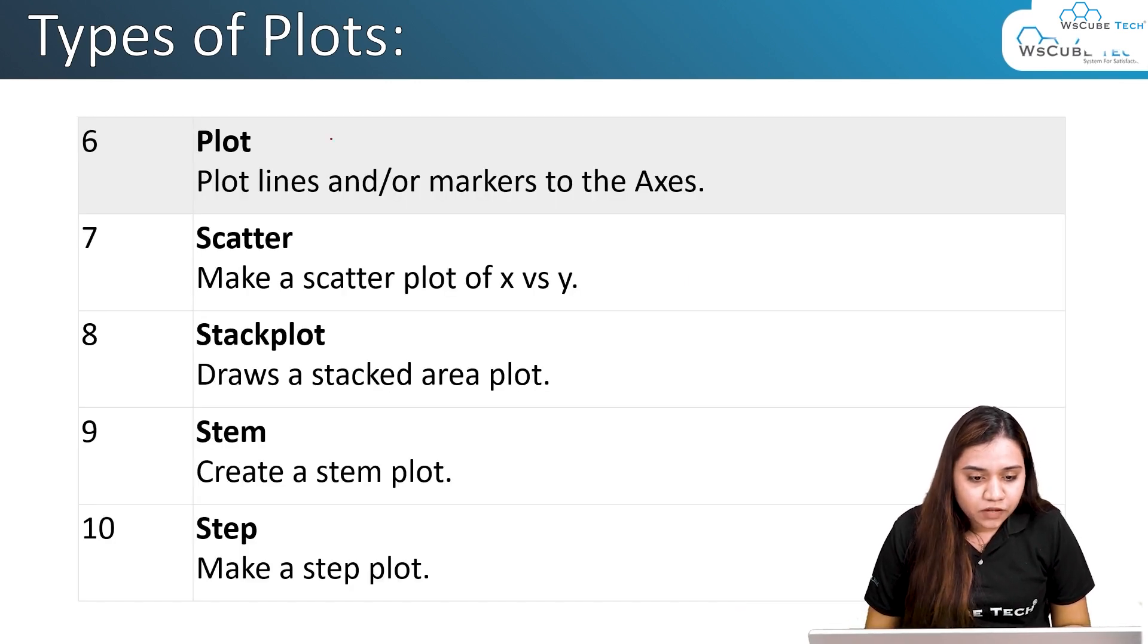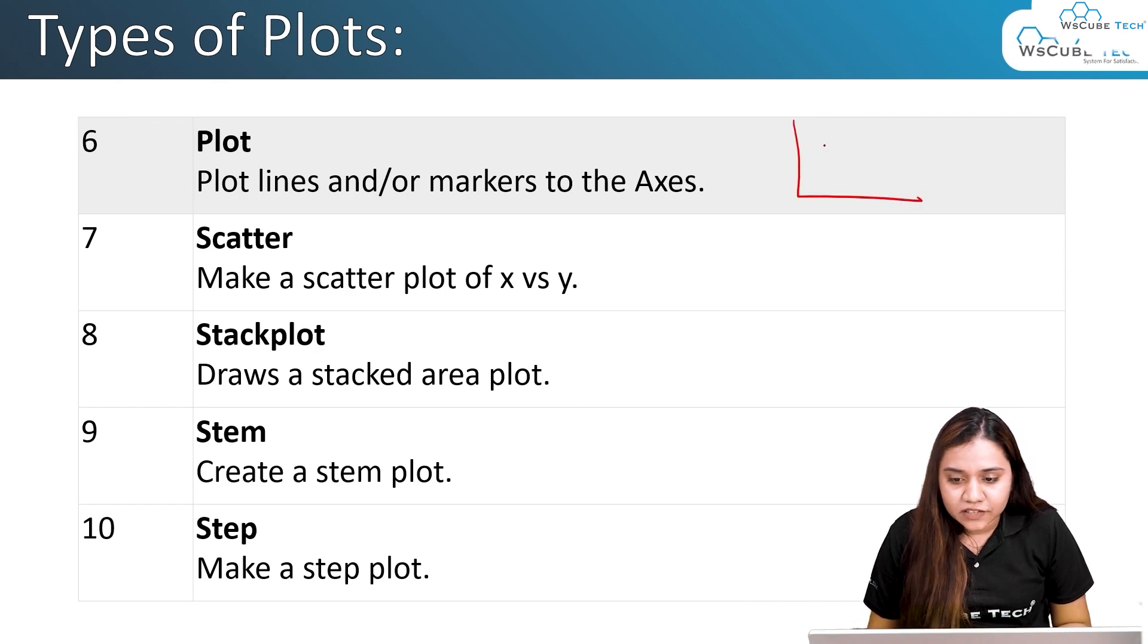After this we have plot, which means a line plot. If you have a straight line or two lines intersecting each other or multiple lines or data with deviation as well.